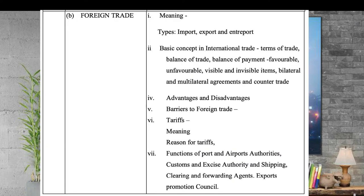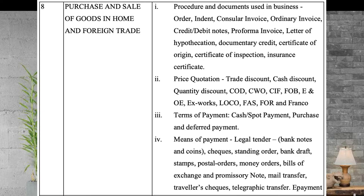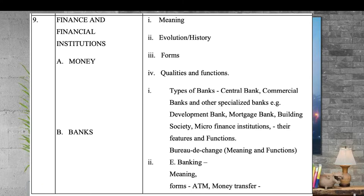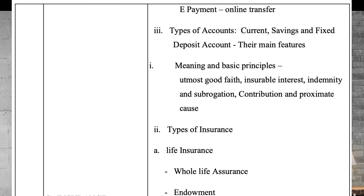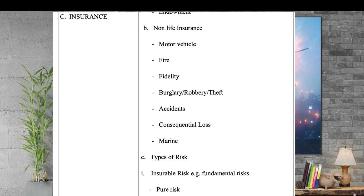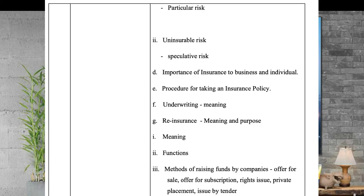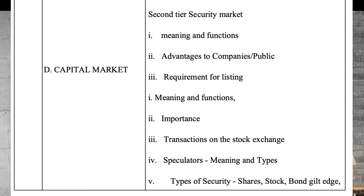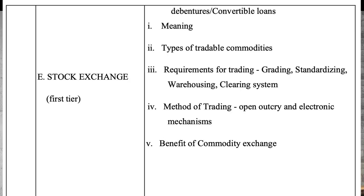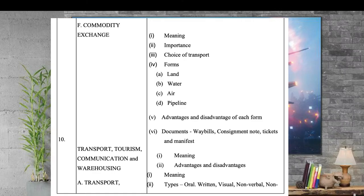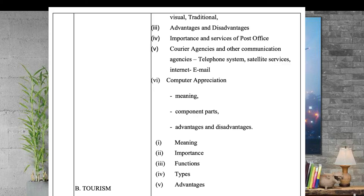You should know about purchase and sales of goods in home and foreign trade. You should also know about finance and financial institutions: banks, insurance, money, capital markets, stock exchange, and commodity exchange. Then you should know about transportation, tourism, communication, and warehousing.